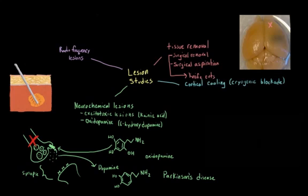The last technique I'm going to talk about is called cortical cooling or cryogenic blockade. And this involves cooling down neurons until they stop functioning, until they stop firing. And there are a number of different ways that scientists can do this.